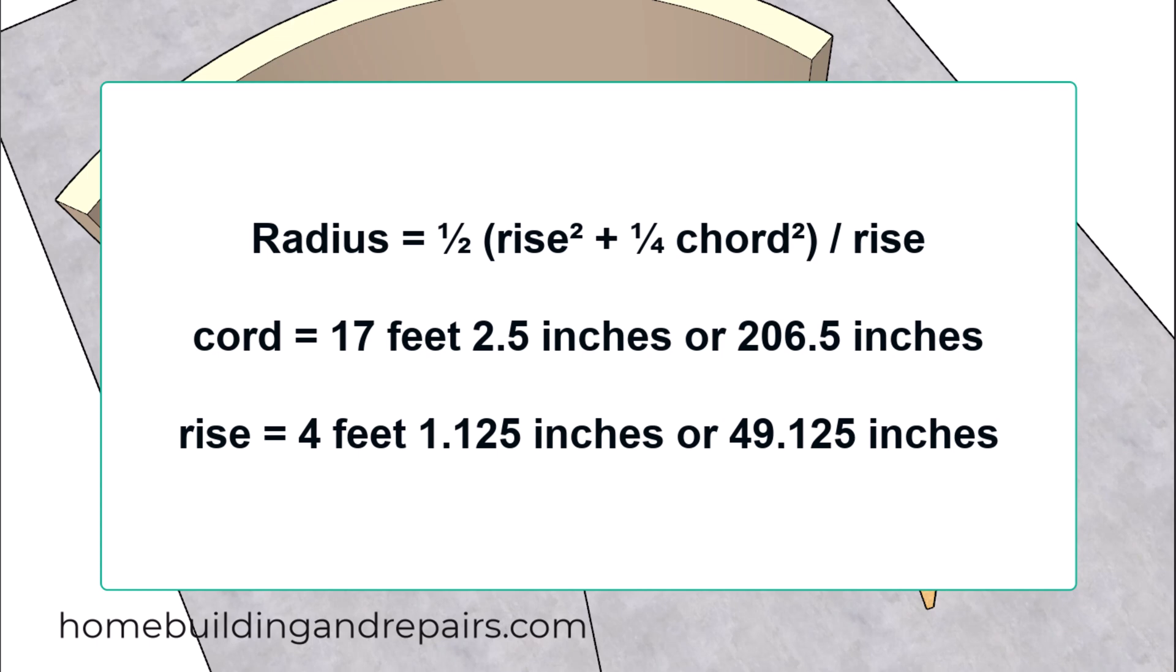Next up, let's take a look at the formula we're going to be using to find the radius. We're going to take half of the rise squared plus a quarter times the chord squared, and then we're going to divide that by the rise.